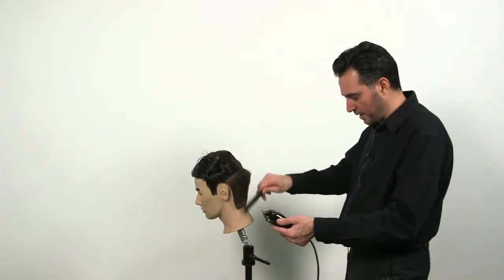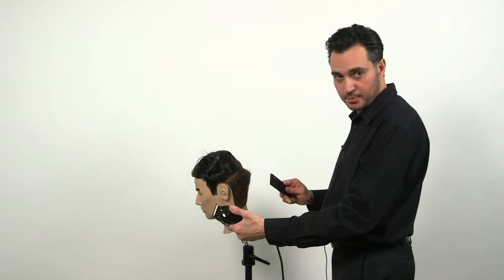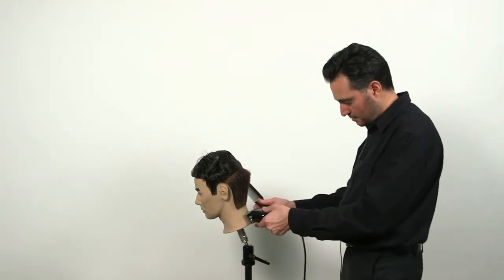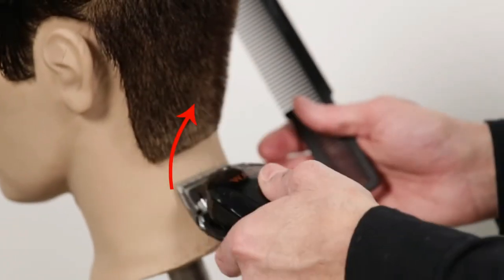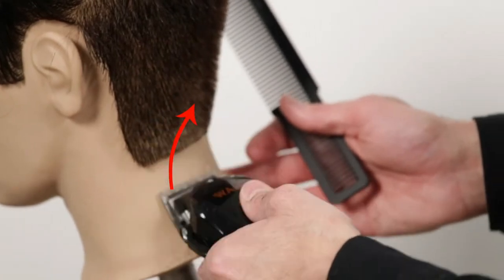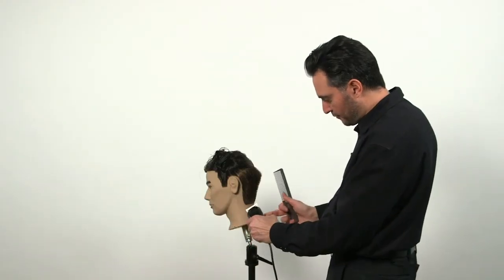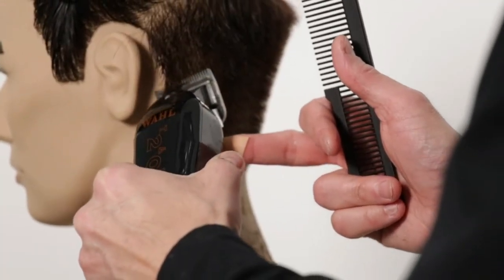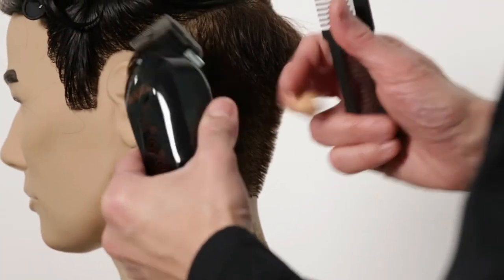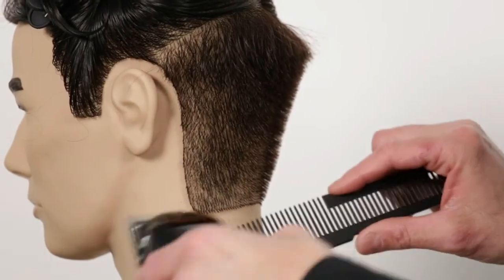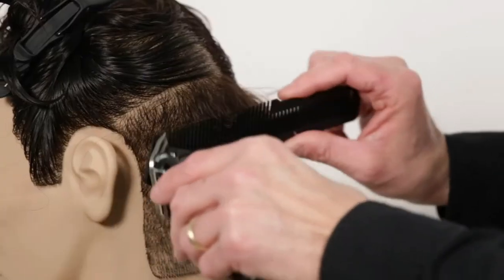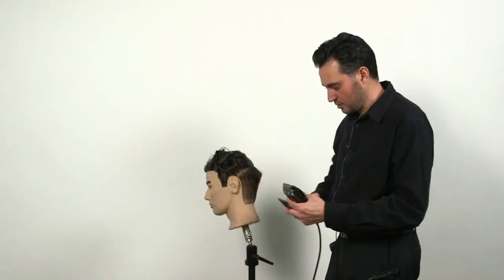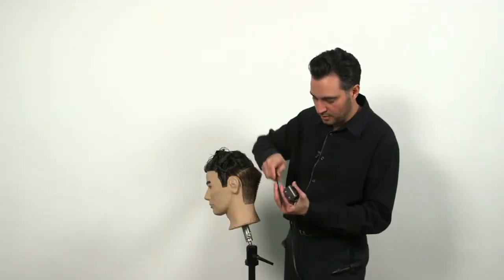Now you can go freehand by placing your thumb on top of the clipper, and you're going to scoop it out. Now I'm going to hold the clipper at 45 degrees angle, and go over the whole haircut with this technique. Make sure that everything blends in. So the idea is to go from shorter to longer.